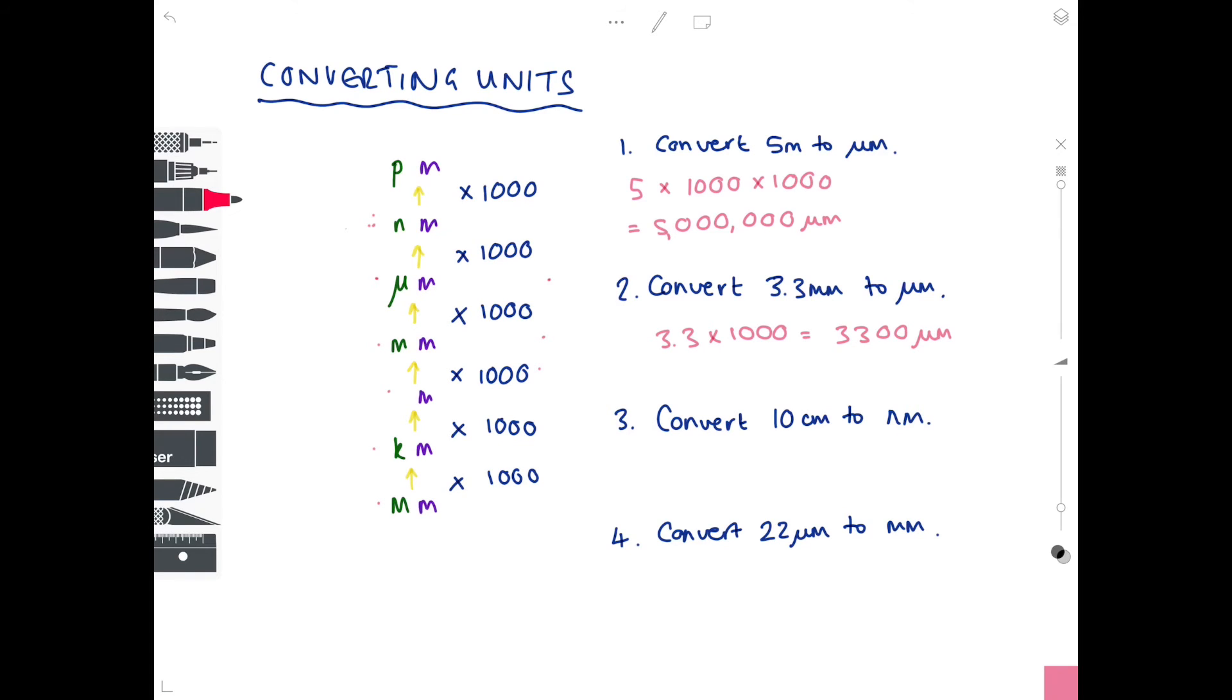Next up, converting 10 centimeters to nanometers. This is more complicated because we've got centimeters which isn't included here. So let's first of all convert centimeters to millimeters. Hopefully that's really straightforward for you because, again, you have a ruler. It says 10 centimeters on it. And you'll be able to work out from your ruler that one centimeter is 10 millimeters. So therefore, 10 centimeters is going to be 100 millimeters.